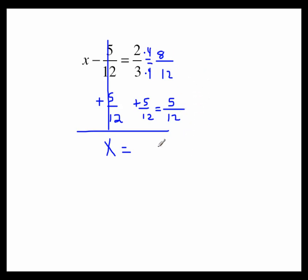We want to add these together. 8 twelfths and 5 twelfths is 13 twelfths, which is an improper fraction, and in most cases that's acceptable.